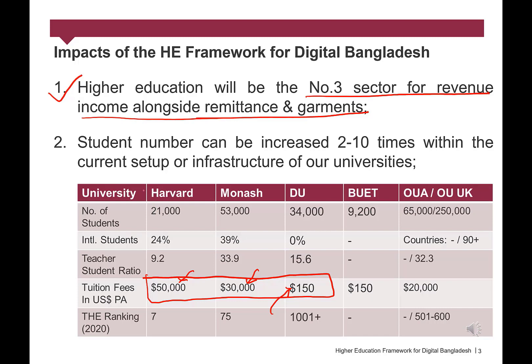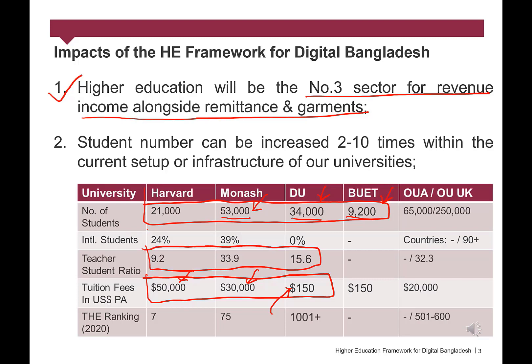There will be no extra cost for local students, but we can make it $5,000 to $10,000 per year for international students studying fully online or blended. Number 2: Student numbers can be increased 2 to 10 times within the current setup or infrastructure of our universities. In order to ensure proper utilization of available resources, we can increase our student population. For instance, in several programs at many Australian universities, there are 90 to 100 students face-to-face while around 500 students are studying online from different parts of the world. Our undergraduate education quality is better and our teacher-student ratio is twice as good as many universities in the developed world, although problems do exist in our graduate education and research. So we need to explore further on how to utilize our resources more effectively and efficiently.